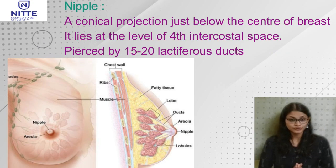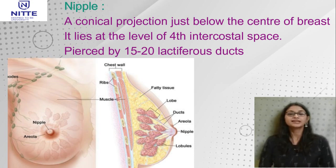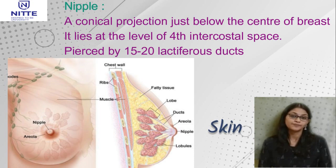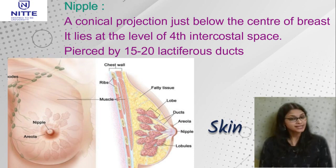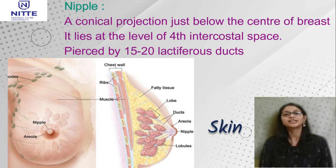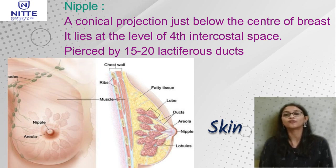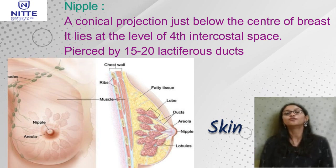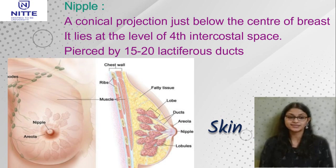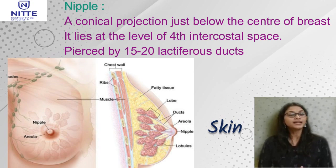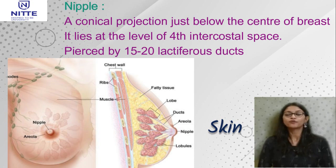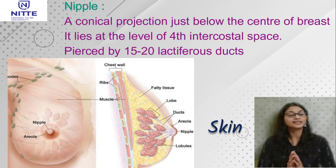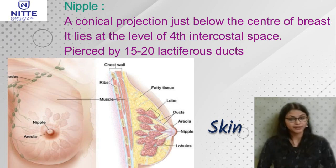The skin contains the nipple and areola. The nipple is a conical projection just below the center of the breast, lying usually at the level of the fourth intercostal space. The nipple is pierced by about 15 to 20 lactiferous ducts and is very rich in nerve supply.